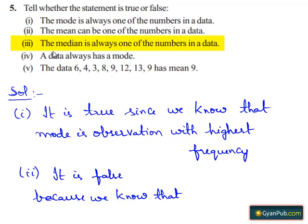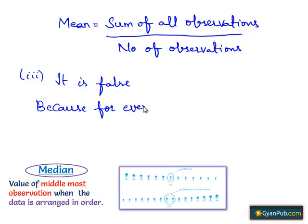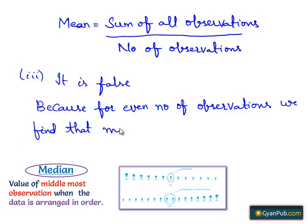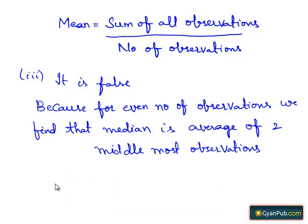Now moving to the third part. They have asked us whether the median is always one of the numbers in a data. The above statement is false because for even number of observations, we find that median is the average of the two middlemost observations. So the above statement is false.